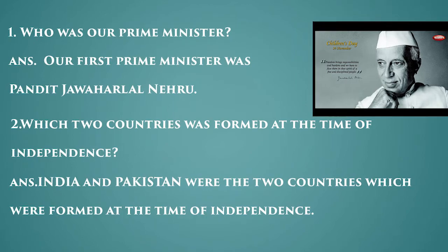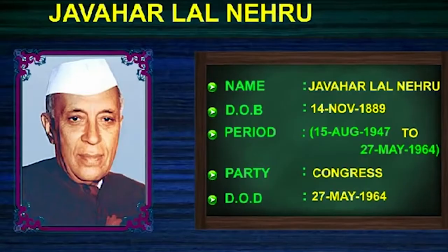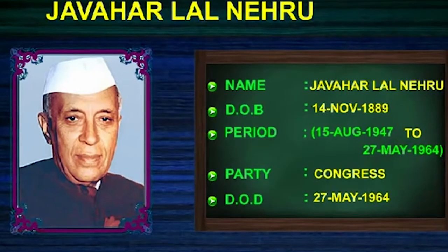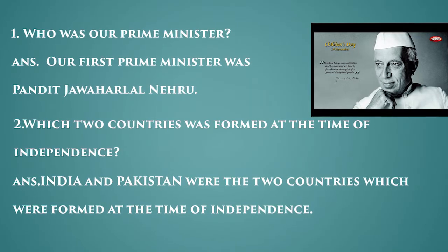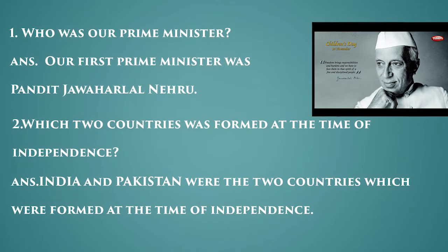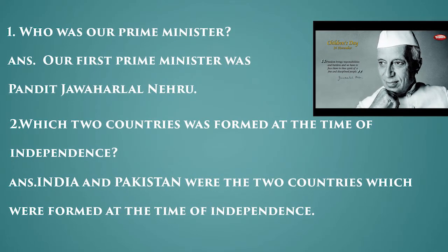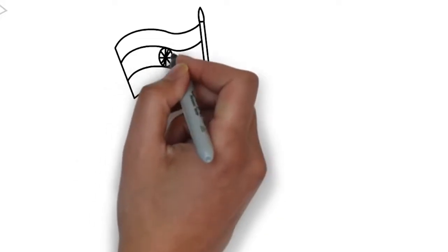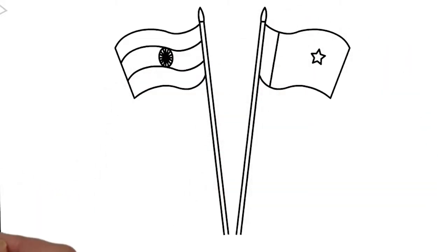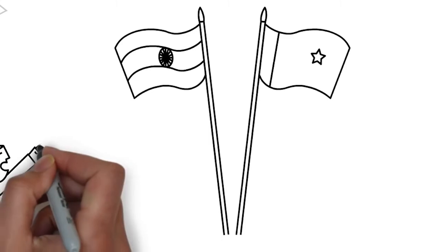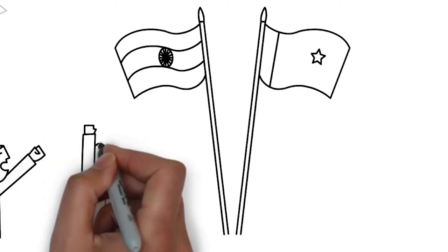First question: who was the first Prime Minister of India? The first Prime Minister of India was Pandit Jawaharlal Nehru. Number two: which two countries were formed at the time of independence? India and Pakistan were the two countries which were formed at the time of independence.